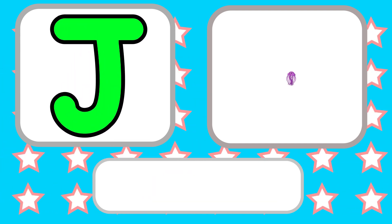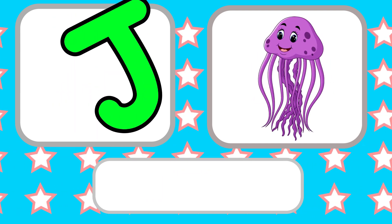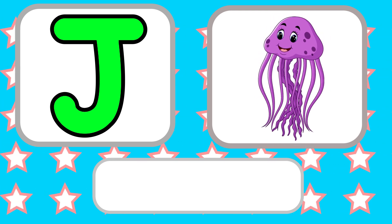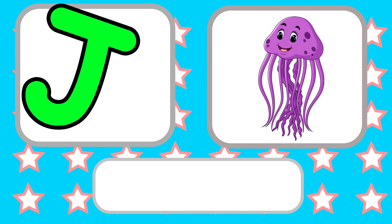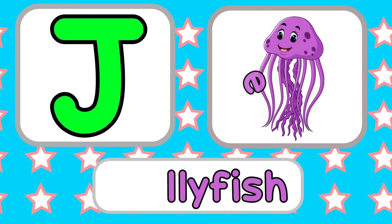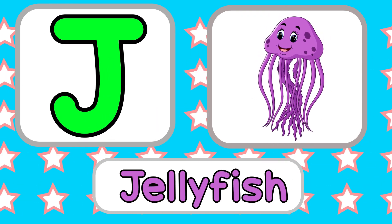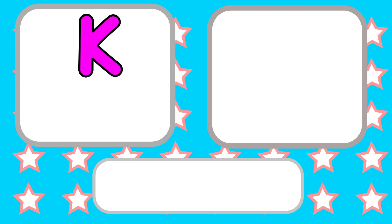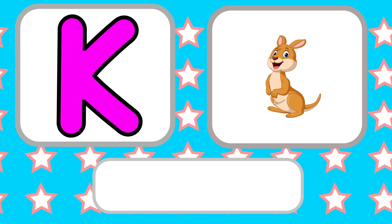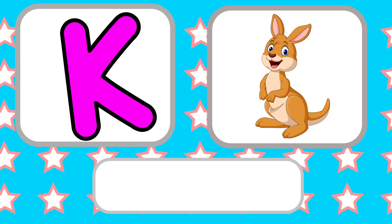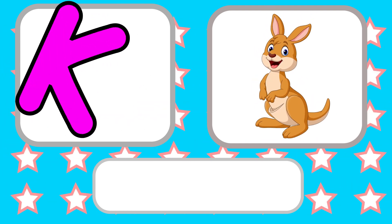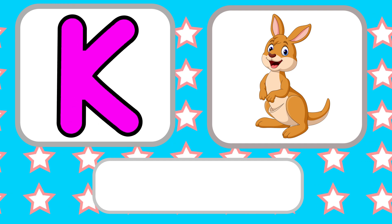I, Iguana. J is for Jellyfish. J, J, Jellyfish. J, J, Jellyfish. K is for Kangaroo. K, K, Kangaroo. K, K, Kangaroo.